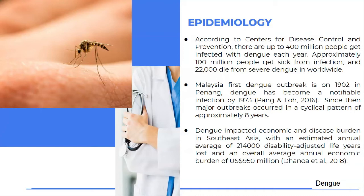Malaysia's first dengue outbreak was in 1973 in Penang, passed on from Singapore. Dengue has become a notifiable infection since 1973. Major outbreaks occur almost every eight years in a cyclical pattern. Dengue impacts economic and disease burden in Southeast Asia with an estimated annual average of 214,000 disability-adjusted life years lost and an overall average annual economic burden of US$950,000,000.